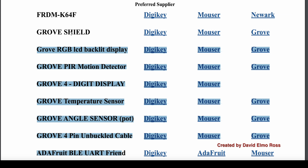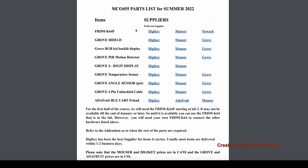However, you do have the option to purchase the Freedom K64 and Grove Shield if you want to work from home. These two items cost about $100, and the Grove Shield and K64 are also about $100 combined, so it's better to use the ones in the open lab. Try to get all items from the same supplier to keep shipping costs to a minimum.